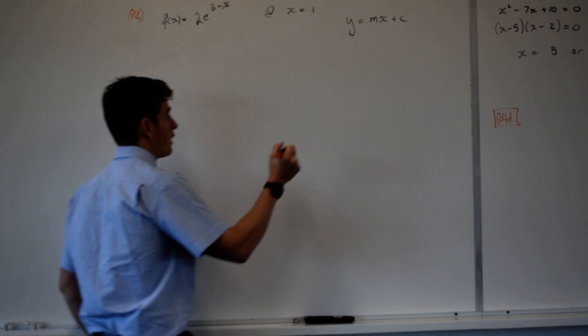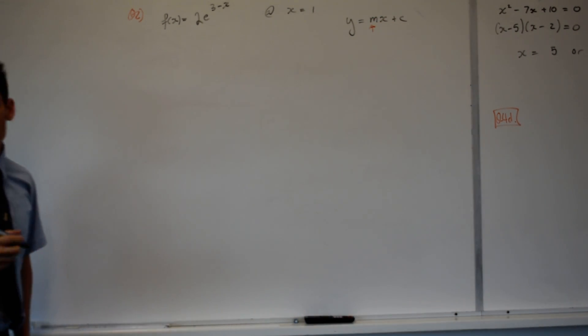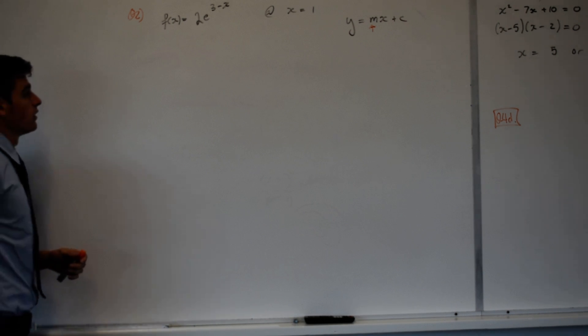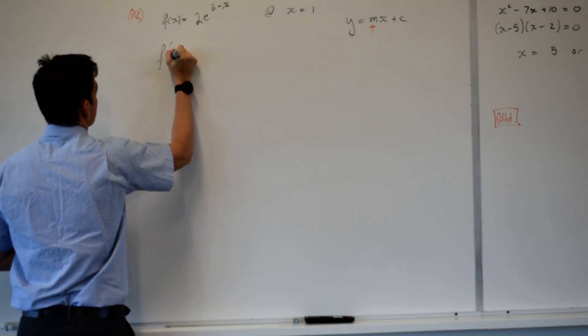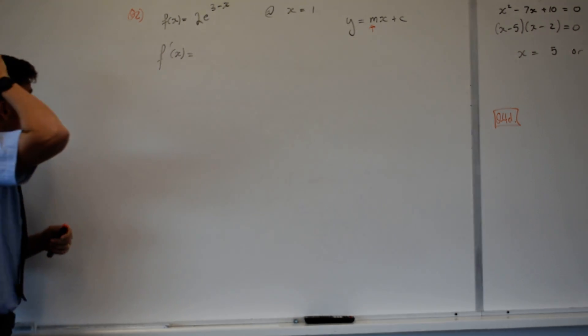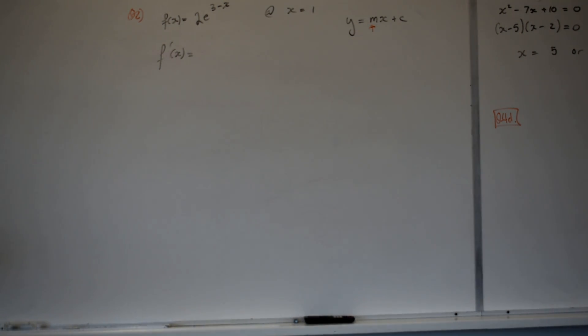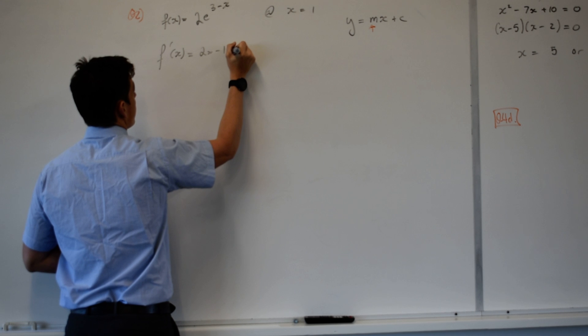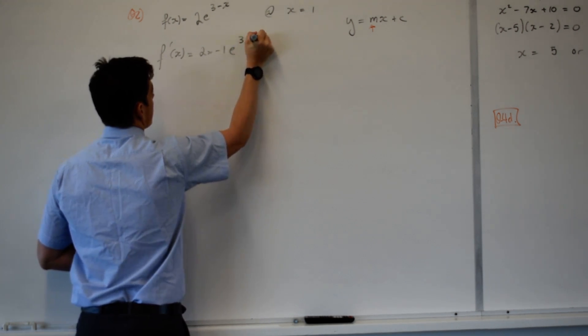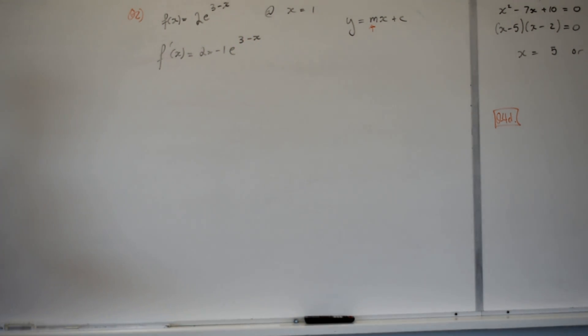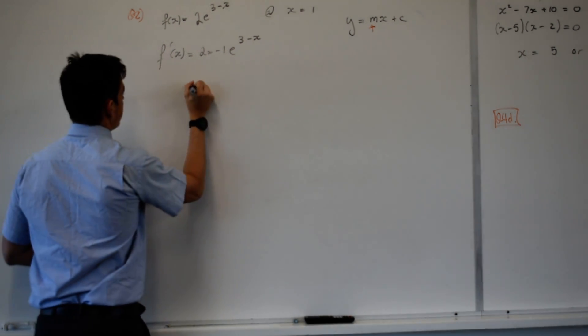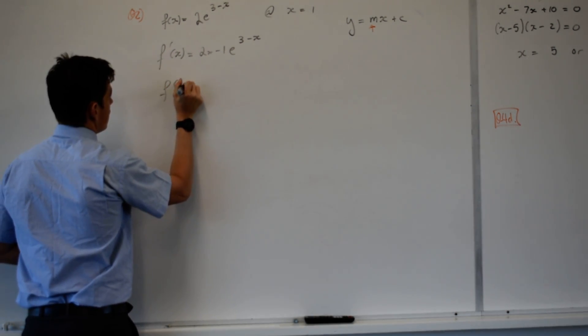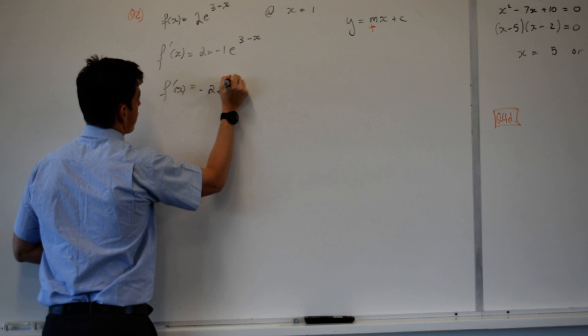How do we find m? We derive, take the gradient of that point. So the first thing we want to do is find f dash x. We're deriving our exponential function. We're probably at the stage now where I don't need to use the chain rule for that. We can probably use a shortcut. The derivative of that is negative 1, and we keep that function the same. So my derivative is negative 2e to the 3 minus x.